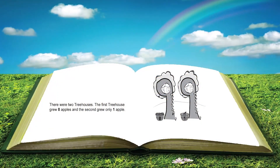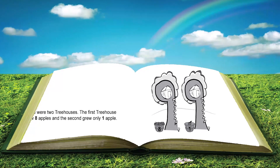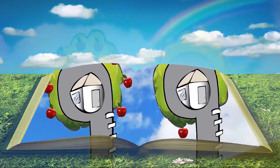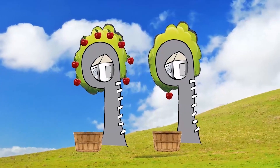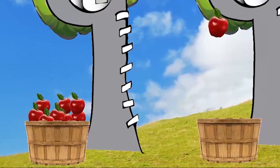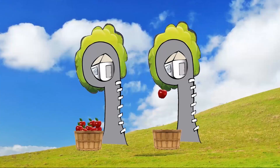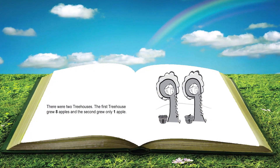There were two treehouses. The first treehouse grew eight apples, and the second grew only one apple. Have you ever seen a treehouse in an apple tree before? I wonder what caused one tree to grow eight apples while the other tree grew only one? There were two treehouses. The first treehouse grew eight apples, and the second grew only one apple.